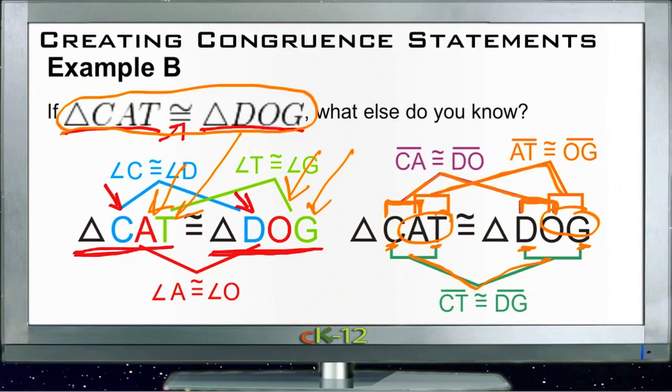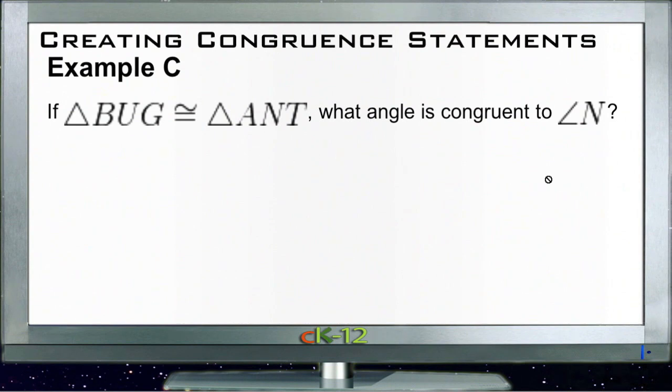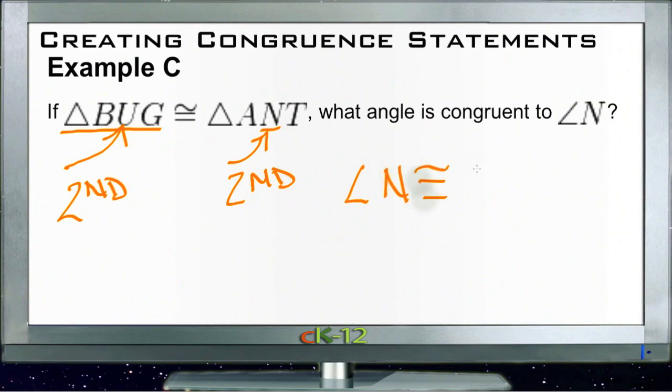All right, let's take a look at example C. Example C says if BUG is congruent to ANT, what angle is congruent to N? Well, again, as we were discussing with the last couple examples, the order that the angles appear is important. So since U is the second angle in the list of the first triangle descriptor and N is the second angle in the list of the second triangle descriptor, that tells us that angle N is congruent to angle U.